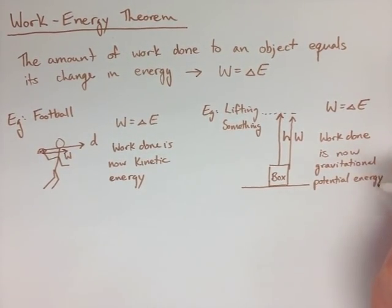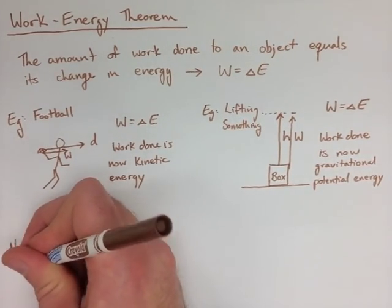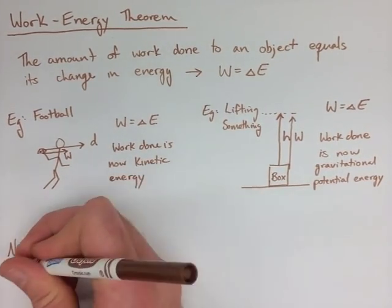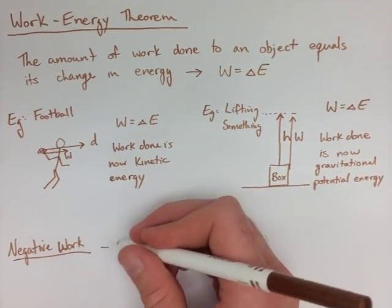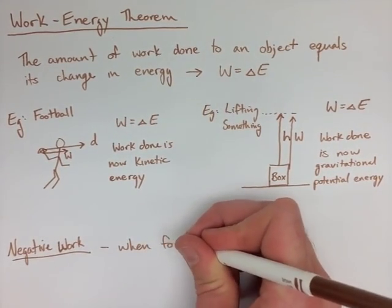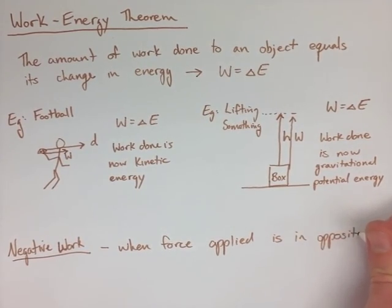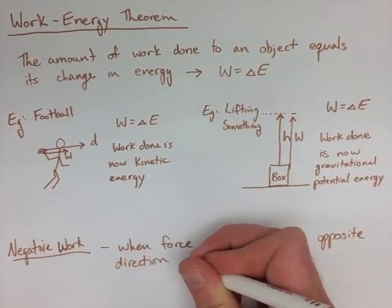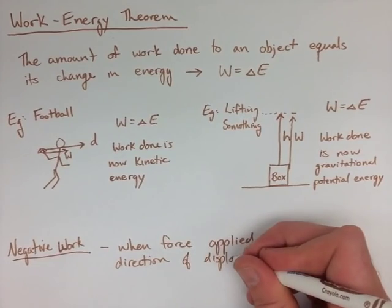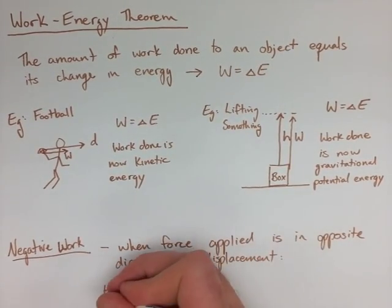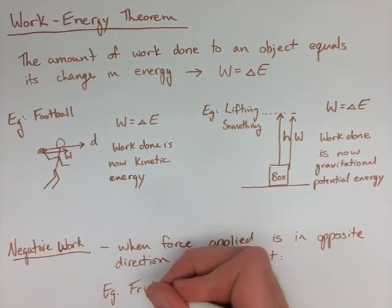The last thing we're going to look at is negative work. Now, the only thing that's different about work and negative work is that the direction we're doing them in is the opposite of what the force applied is. So if the force is applied to the left, the work would be done to the right. If the force was applied to the right, the work would be done to the left.